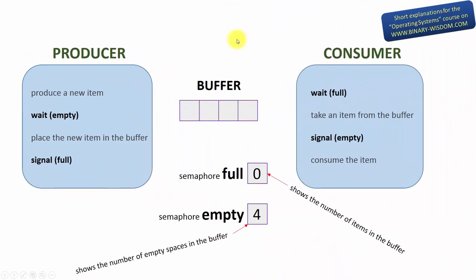On the screen you can see the solution for the producer and consumer processes. Both processes can see a shared buffer of a fixed size — the buffer on our illustration is big enough to store up to four items. Both processes can also see the semaphore full and the semaphore empty. The semaphore full shows the number of items in the buffer and is initialized to zero, because there are no items yet. The semaphore empty shows the number of empty spaces in the buffer, and since all four spaces are initially free, we initialize this semaphore to four.